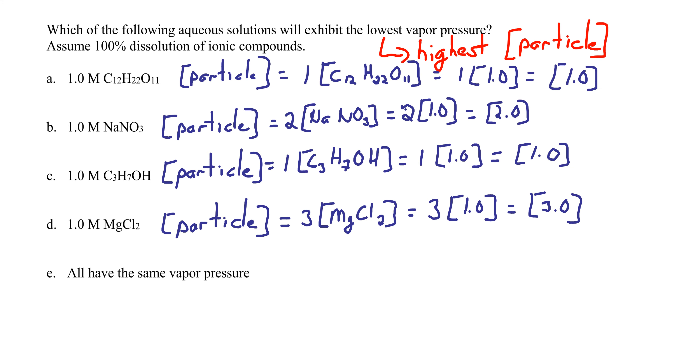Okay, so we've calculated the particle concentration of each of these solutions. The answer to our question will be the one that has the highest particle concentration, and therefore it is going to be choice D, particle concentration of 3.0 molar.